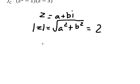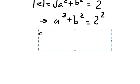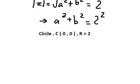So we put the power of two on both sides to cancel the square root. We can see that this is about the circle with the center (0, 0) and the radius that is number two. Now we need to draw this one.